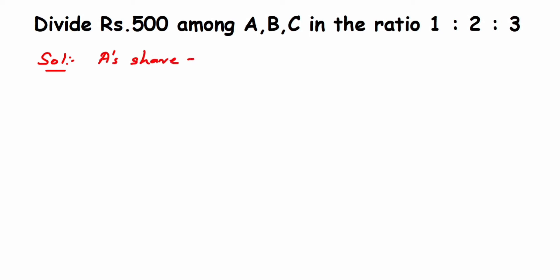A's share will be equal to 1x. I'm taking x here because the ratios are always given in reduced form, the lowest form, so we don't know the actual number. That's why we're taking a variable x.